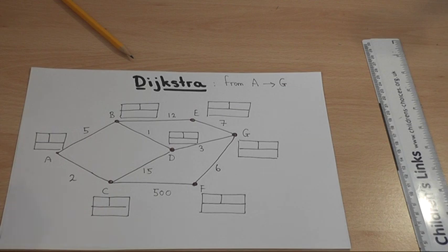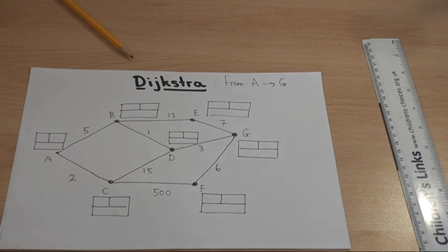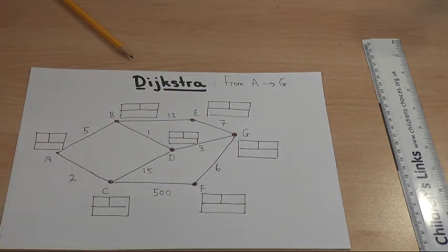So Dijkstra does not just find the shortest route from A to G. If you keep on going, it finds the shortest route from A to every single node in this network, as I will show you. But let's begin.